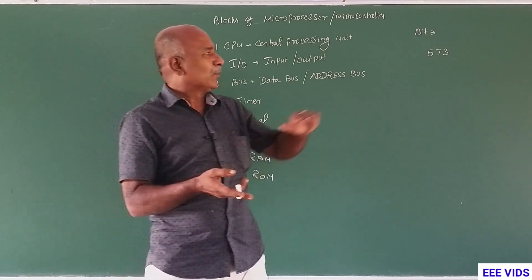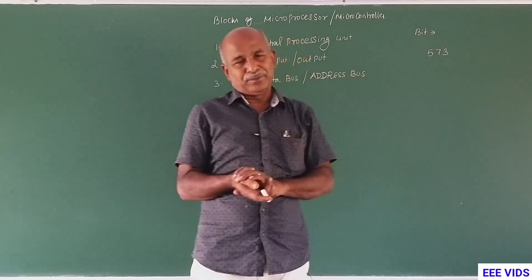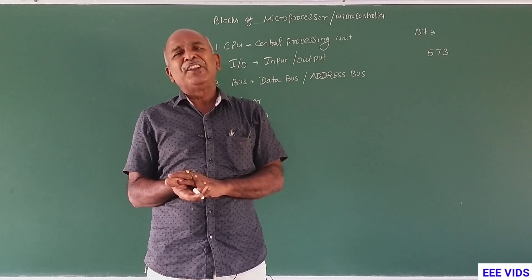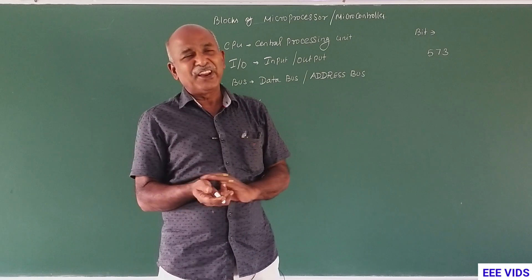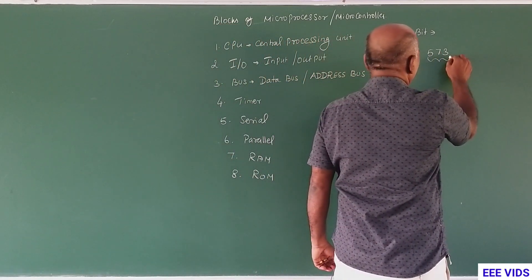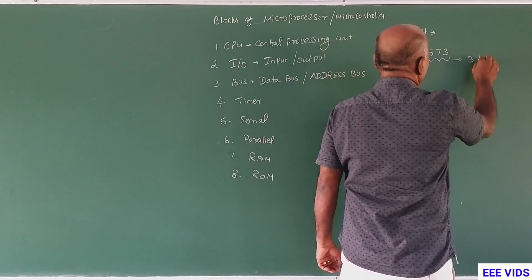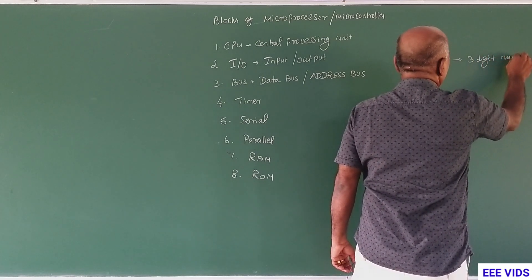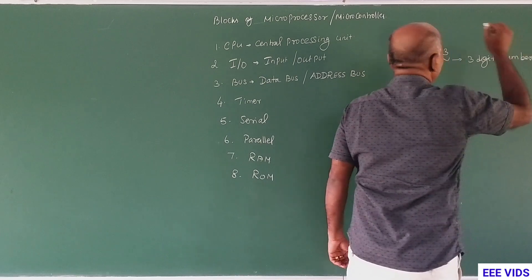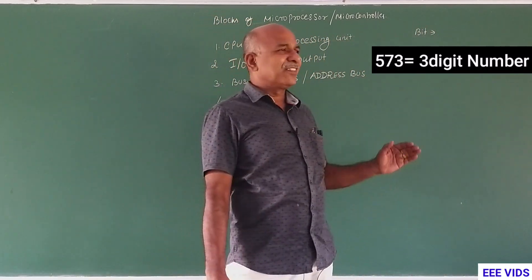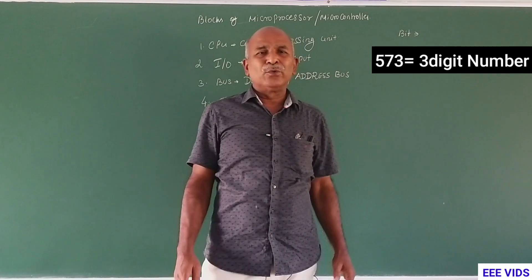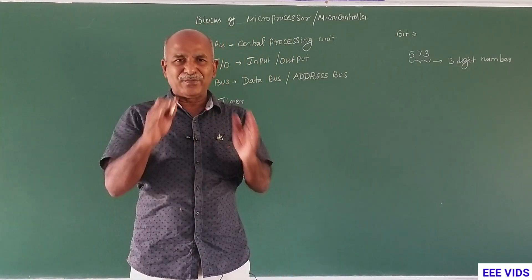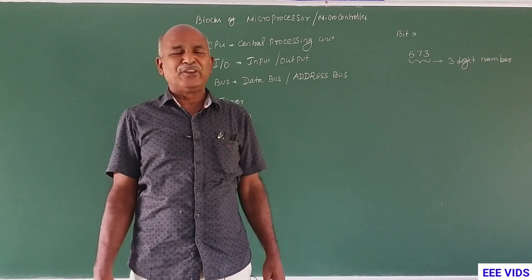Now we will take the decimal number system. We will take the number 573. In 573, we will say it is a three-digit number. For example, 98 is a two-digit number. 1, 9, 7, 5 is a four-digit number. So the number of digits — three digits, four digits, two digits.